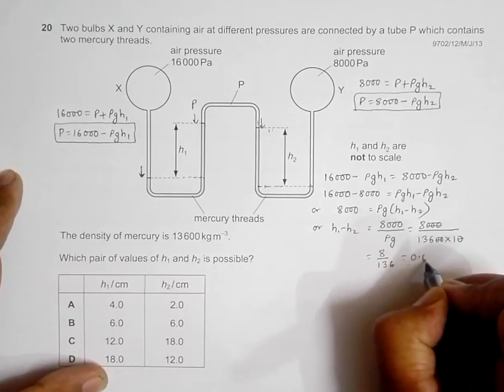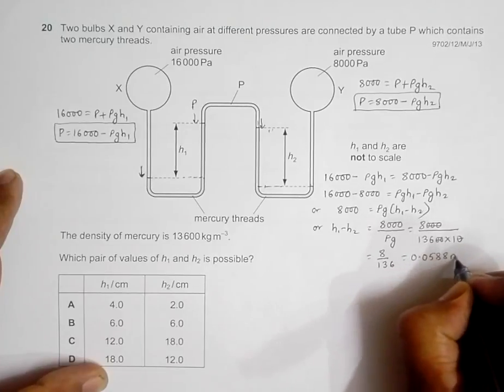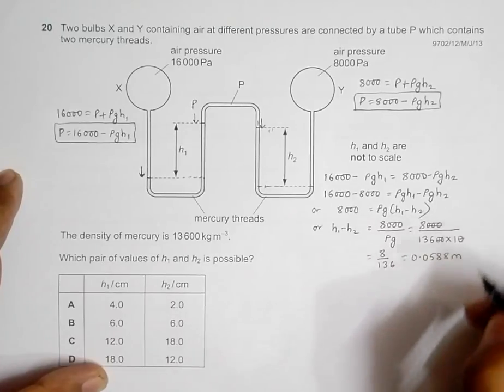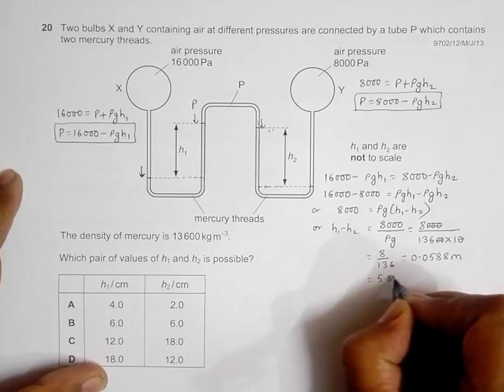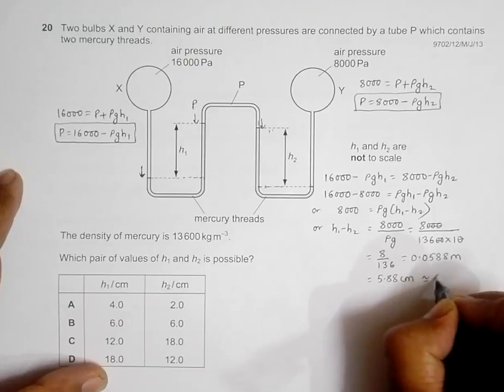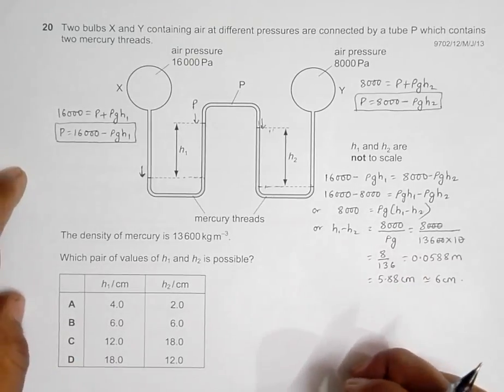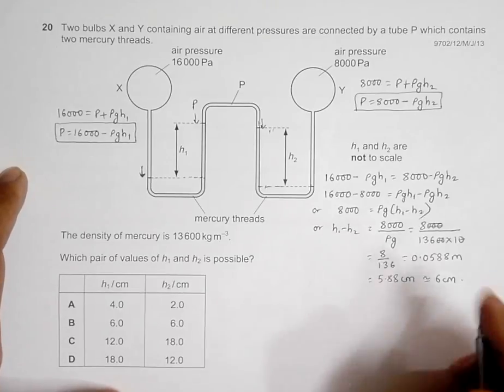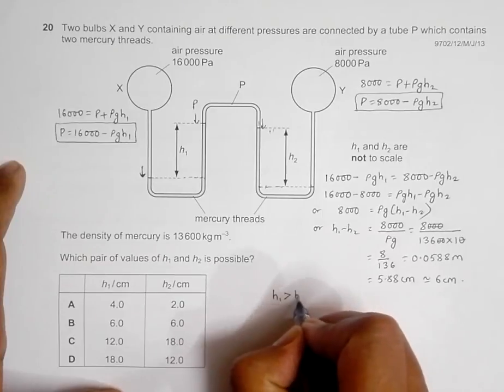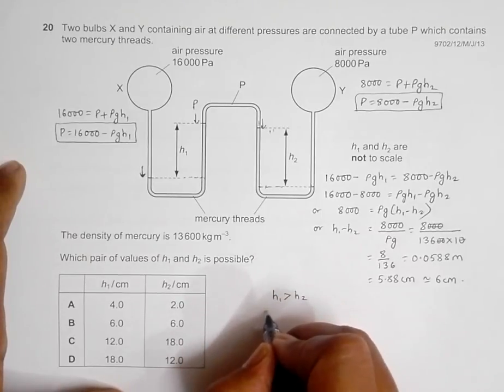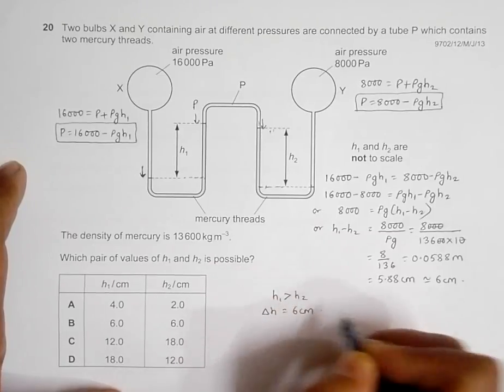So 8 divided by 136 will be equal to 0.0588 meters, and that's equal to 5.88 cm, nearly equal to 6 centimeters. So the height difference between h1 and h2 is equal to 6 centimeters, and also h1 is more than h2. The difference Δh is equal to 6 centimeters.